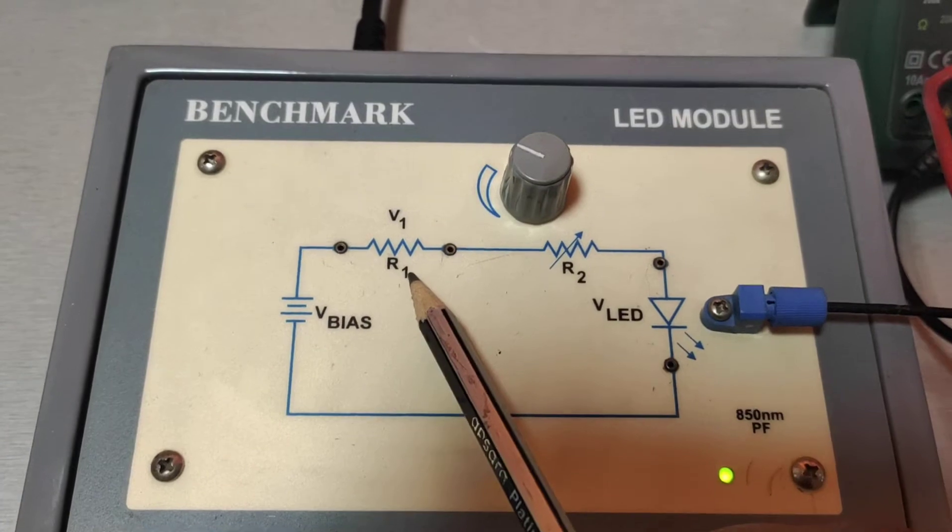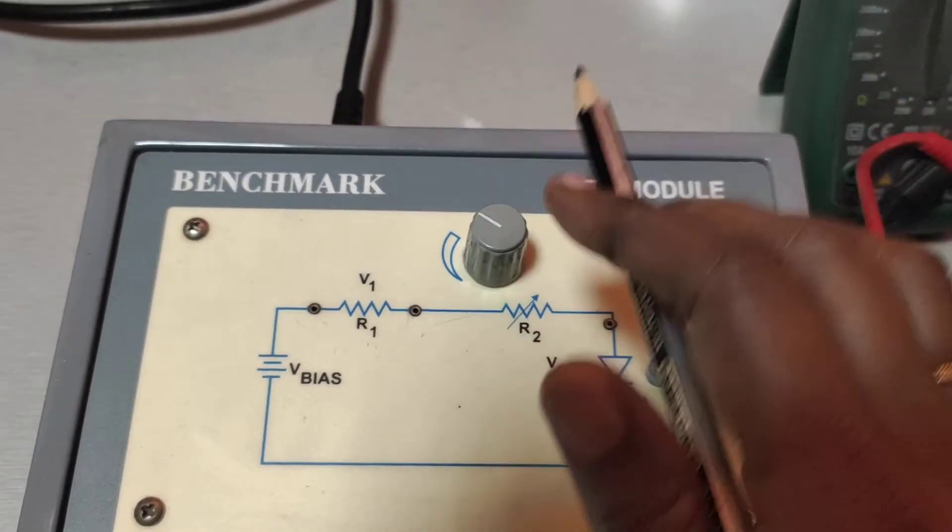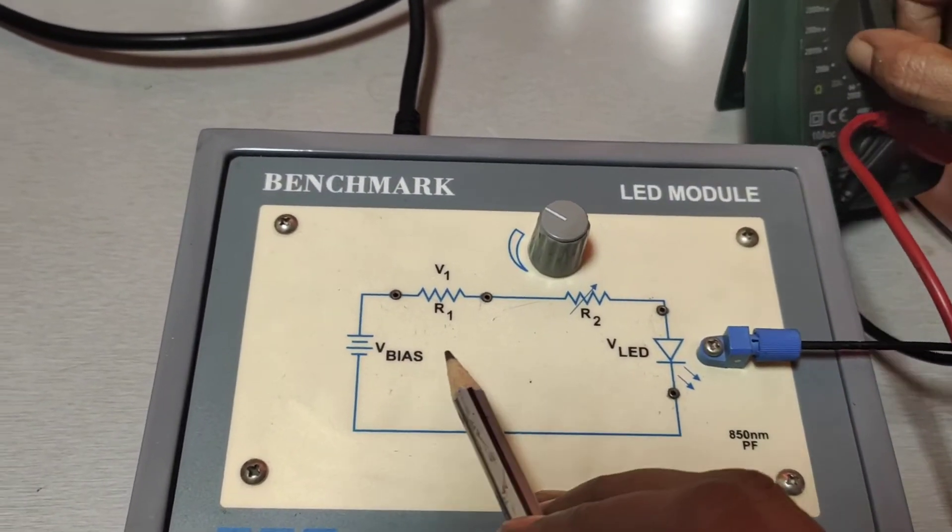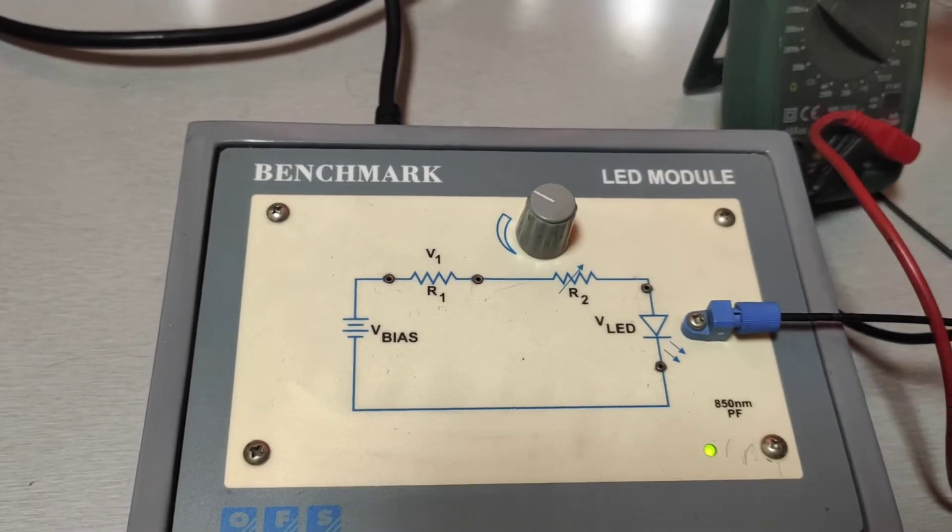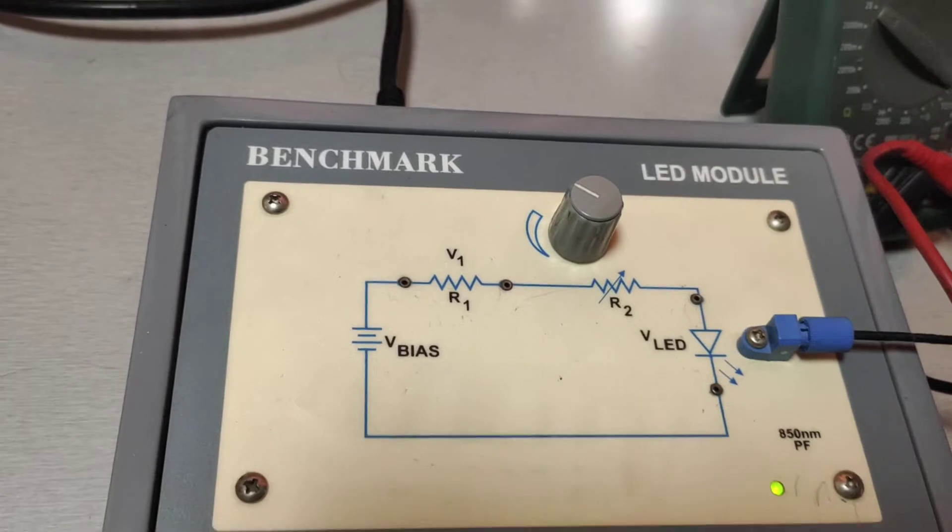First, we set the V1 voltage with the help of this potentiometer. We adjust the knob and set the value. Here, internal resistance R1 is 180 ohm. First I set the value.